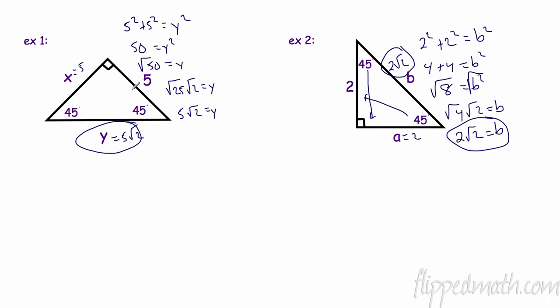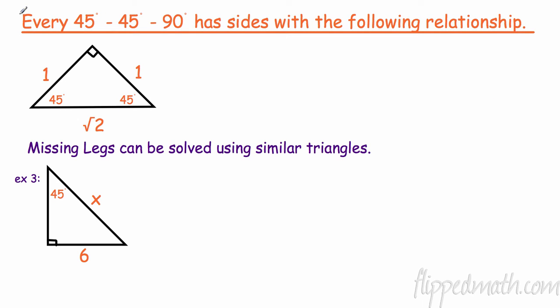Take a look — what's the relationship here? The two legs are always the same: 5 and 5, 2 and 2. The hypotenuse is always just that leg times √2. So every 45-45-90 triangle has sides with the ratio 1 : 1 : √2, where the legs are across from the 45° angles and √2 is across from the 90°.